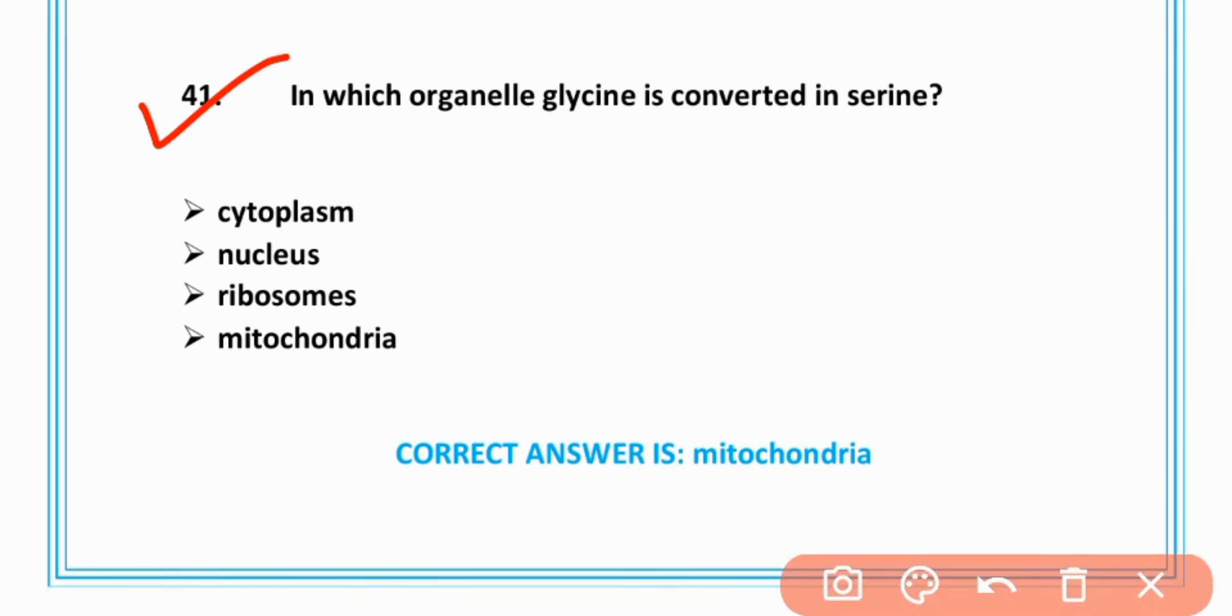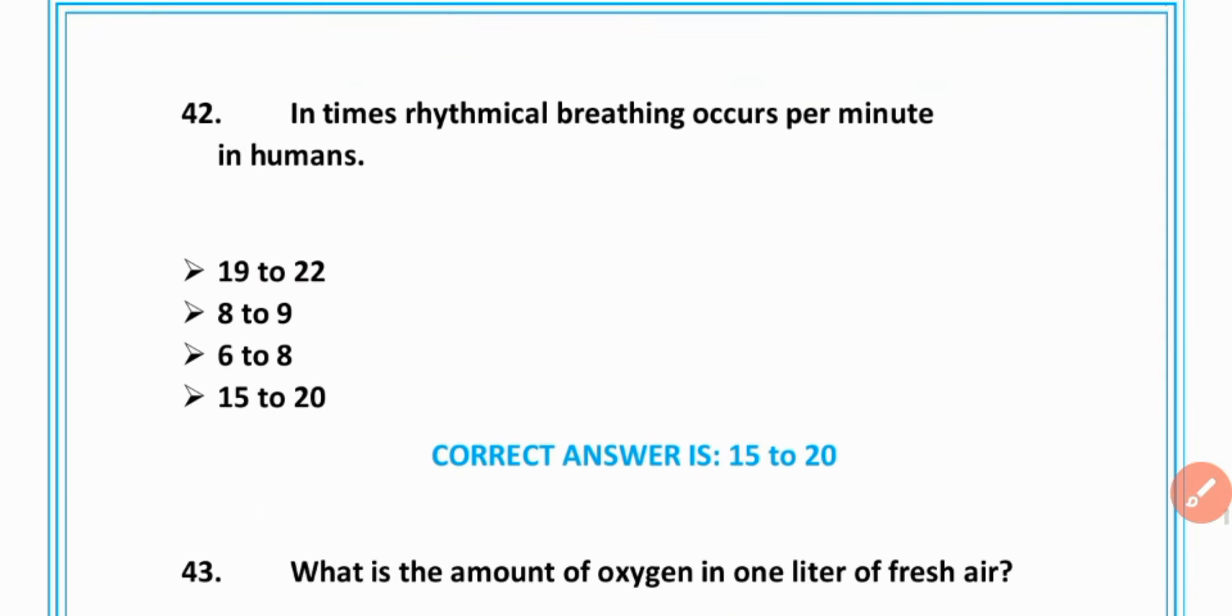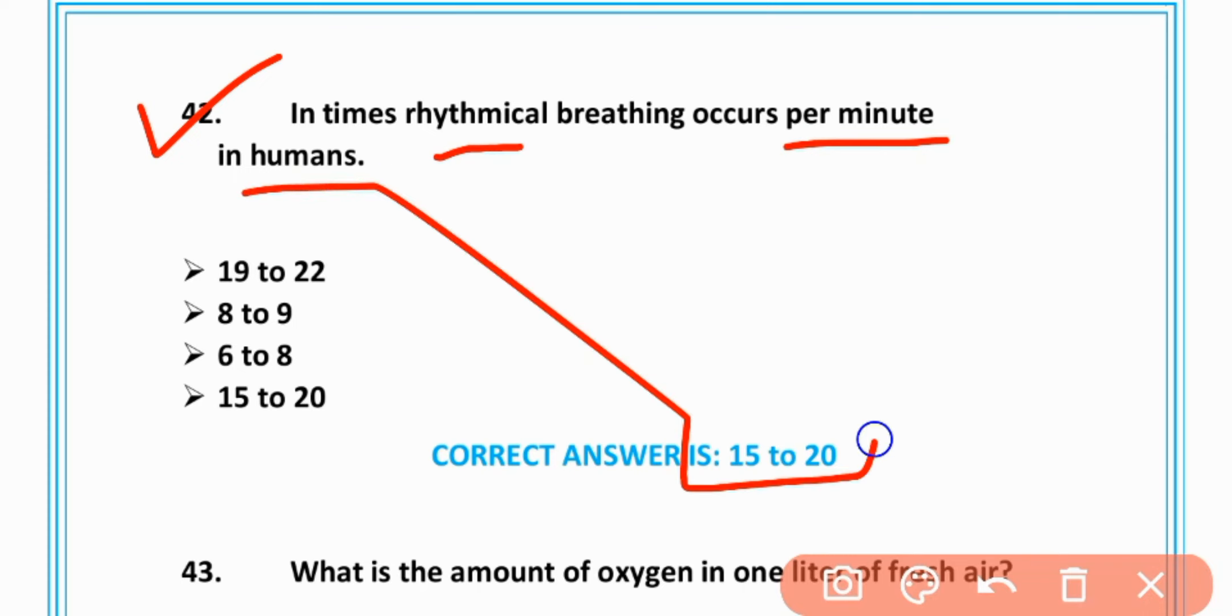MCQ number 41: In which organelle is glycine converted to serine? Mitochondria, option D is correct. MCQ number 42: The number of rhythmical breathing per minute in human is 15 to 20, option D is correct.